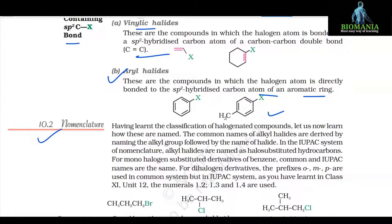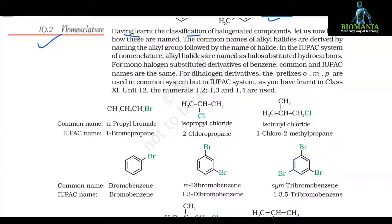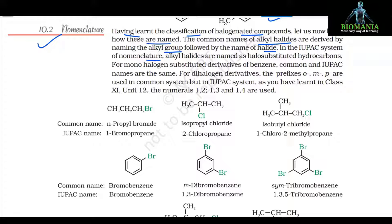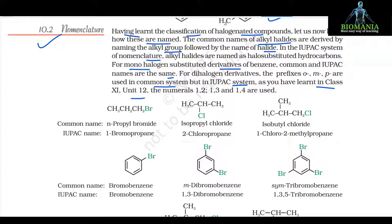10.2 Nomenclature. Having learned the classification of halogenated compounds, let us now learn how these are named. The common names of alkyl halides are derived by naming the alkyl group followed by the name of halide. In the IUPAC system of nomenclature, alkyl halides are named as halo-substituted hydrocarbons. For monohalogen-substituted derivatives of benzene, common and IUPAC names are the same. For dihalogen derivatives, the prefixes ortho, meta, para are used in the common system, but in the IUPAC system, as learnt in class 11th unit 12th, the numerals 1,2; 1,3; and 1,4 are used. Here you can see the common names, their structures, and their IUPAC names.